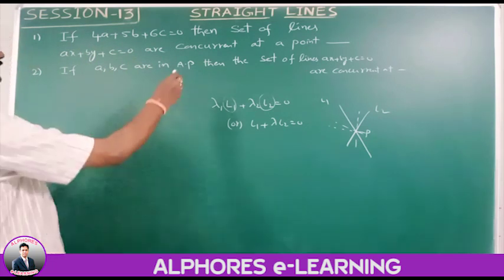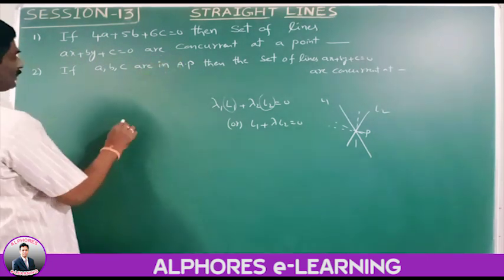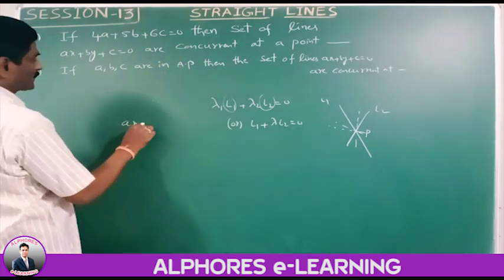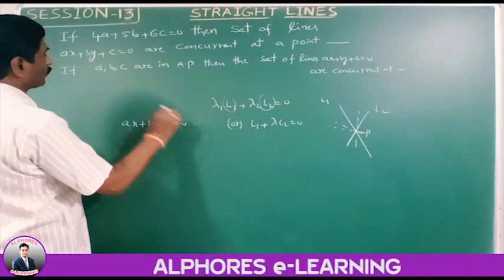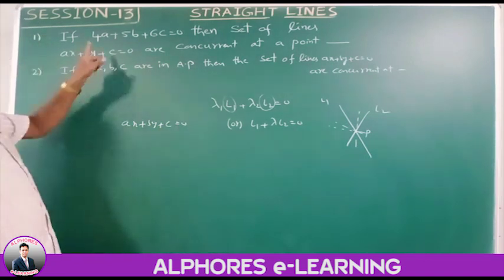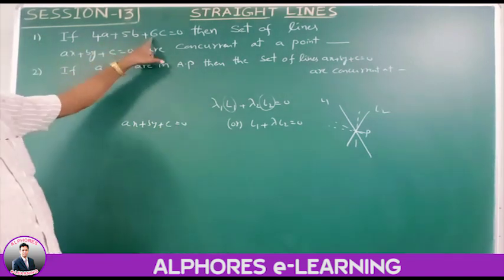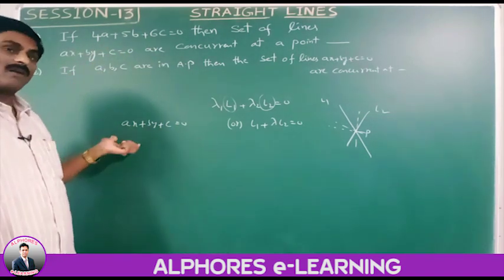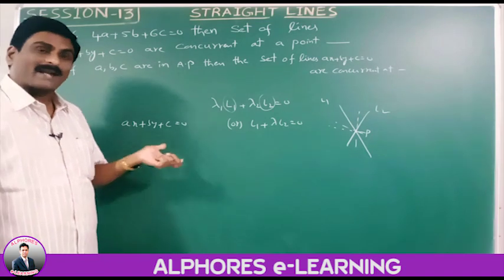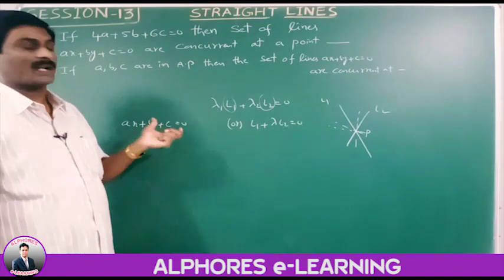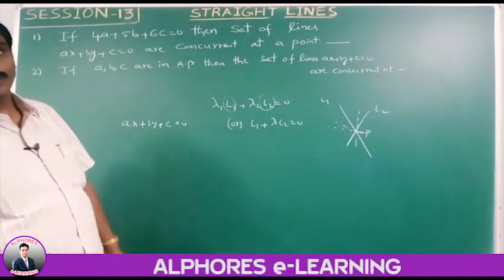The set of lines is ax plus by plus c equals 0. For different values of a, b, c we get different lines. All of these lines are concurrent, and now we find the point of concurrency.